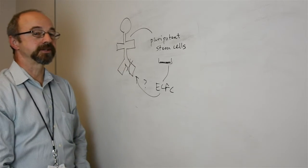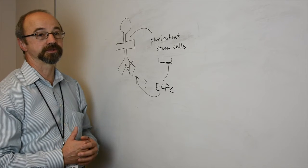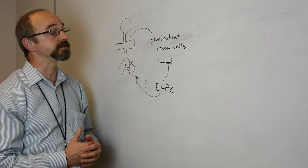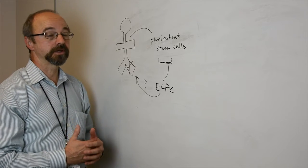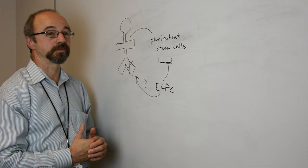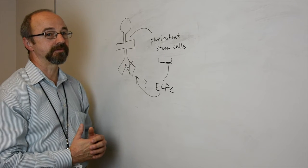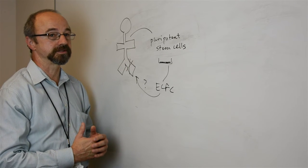The next thing to consider is how could we potentially use these cells to help patients with cardiovascular diseases. We've been working with a vascular surgeon here at the School of Medicine named Dr. Michael Murphy, and he sees many patients who have a disease called peripheral arterial disease.